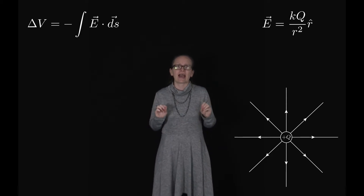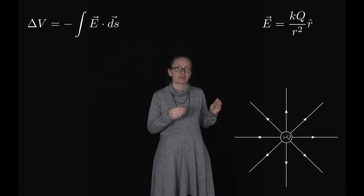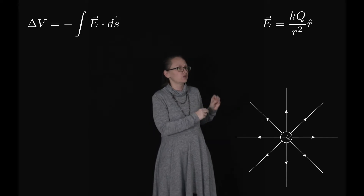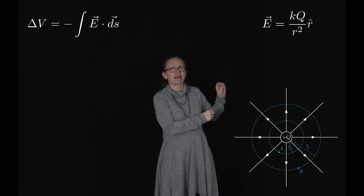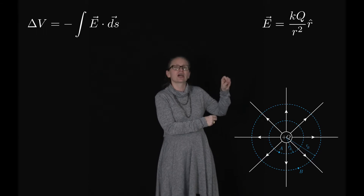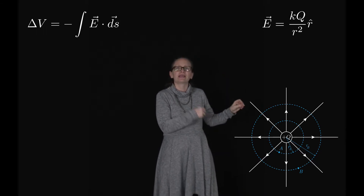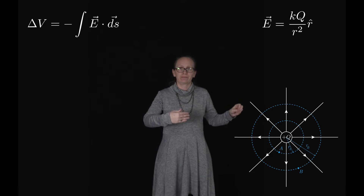Let's consider how we can calculate the potential difference — the voltage difference between two points. We choose point A at radius RA, quite close to the charge, and point B at radius RB, slightly further away.